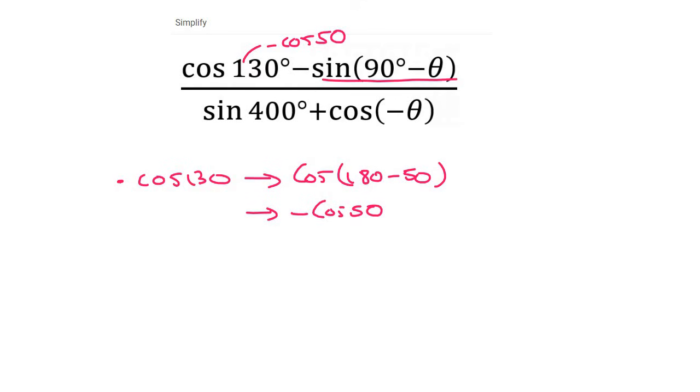Now for sin of 90 minus theta, that is a co-function, and you need to know all four of them. So I'll write them out for you. There are other ways of doing all these questions. If you're using a different method, you're not necessarily wrong, just make sure you get to the same answer.